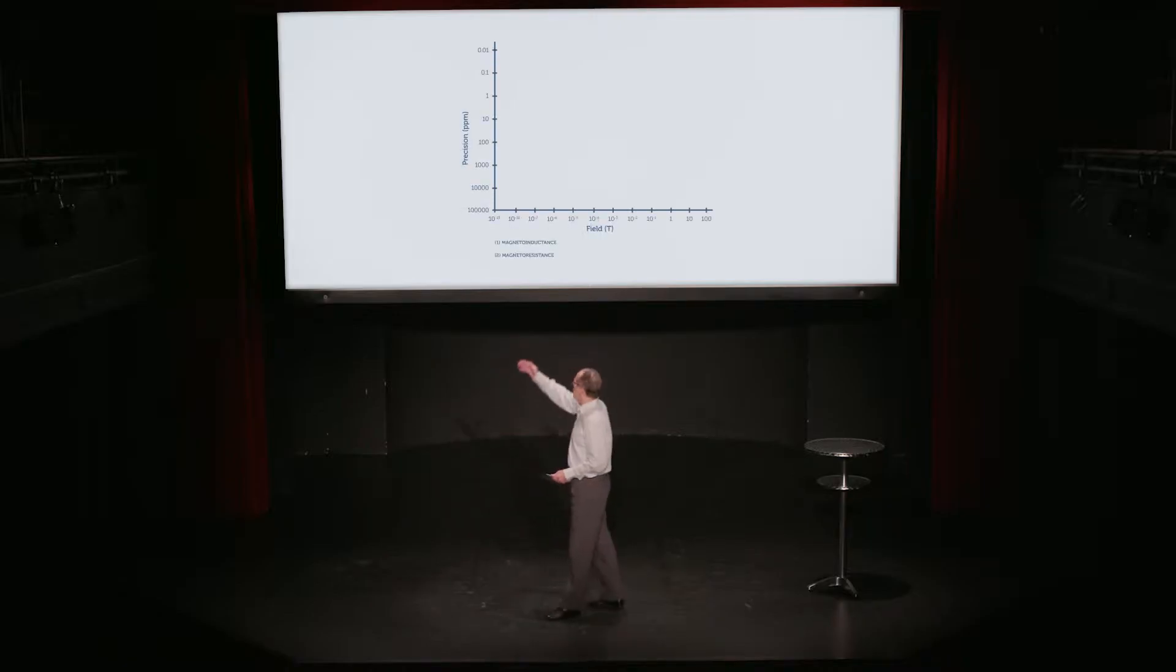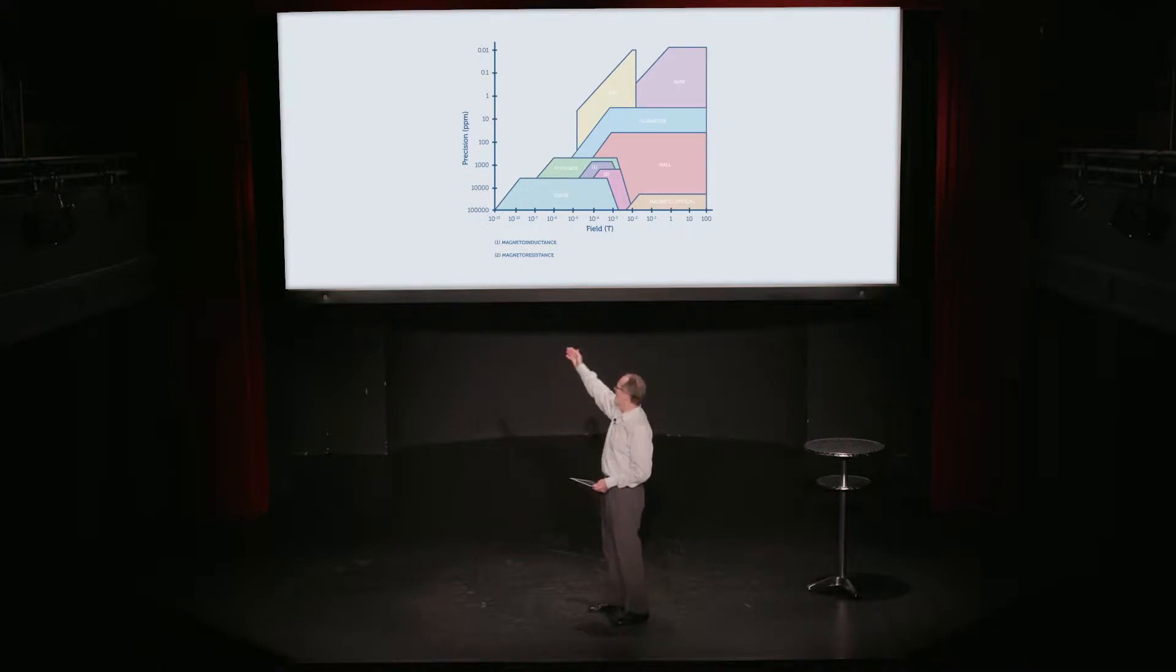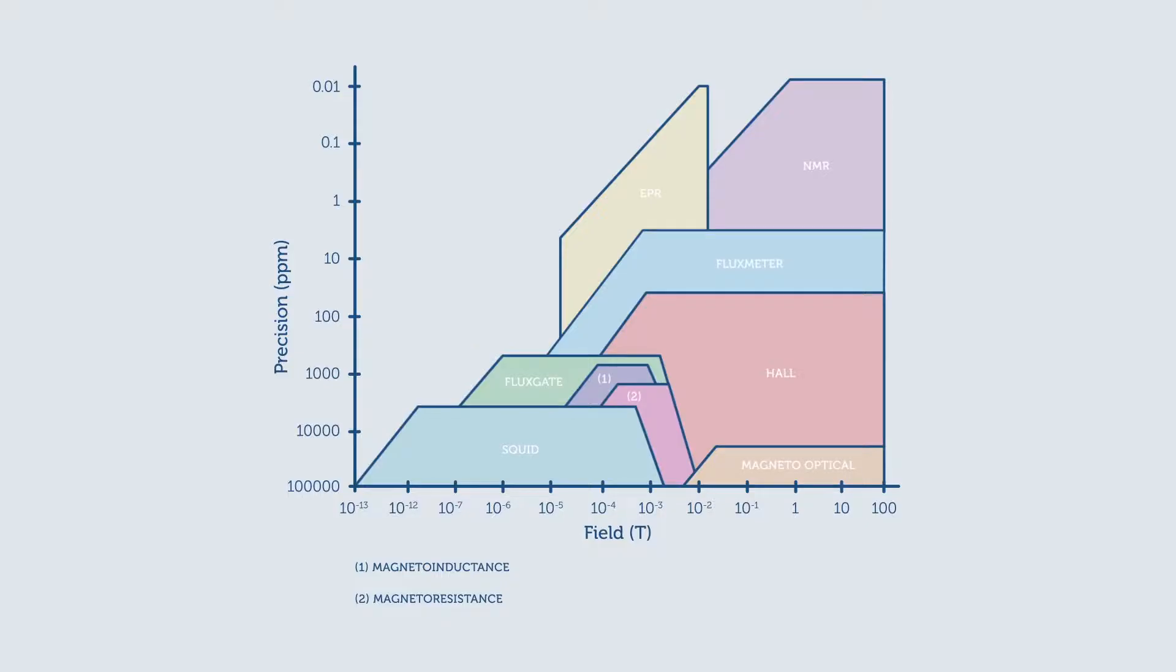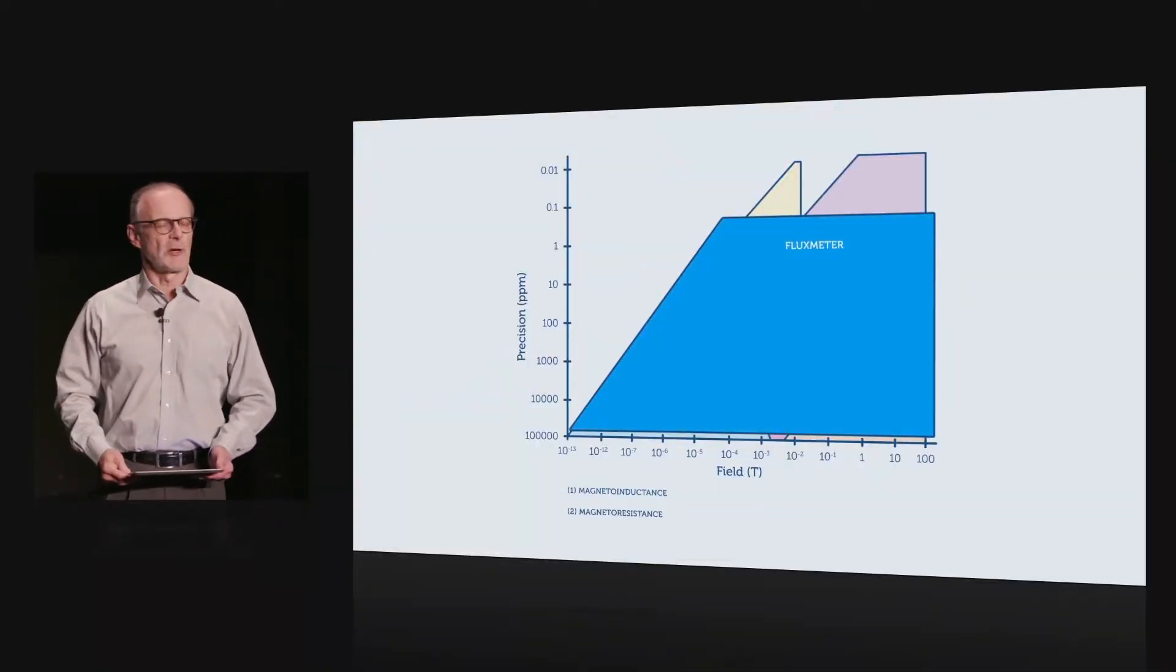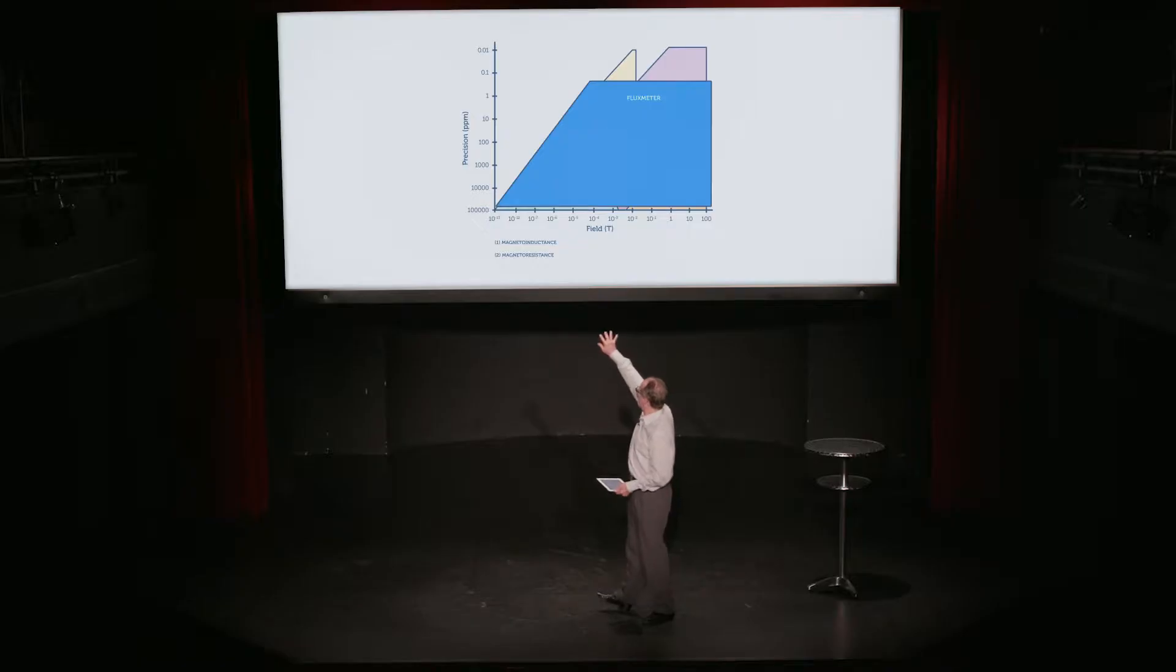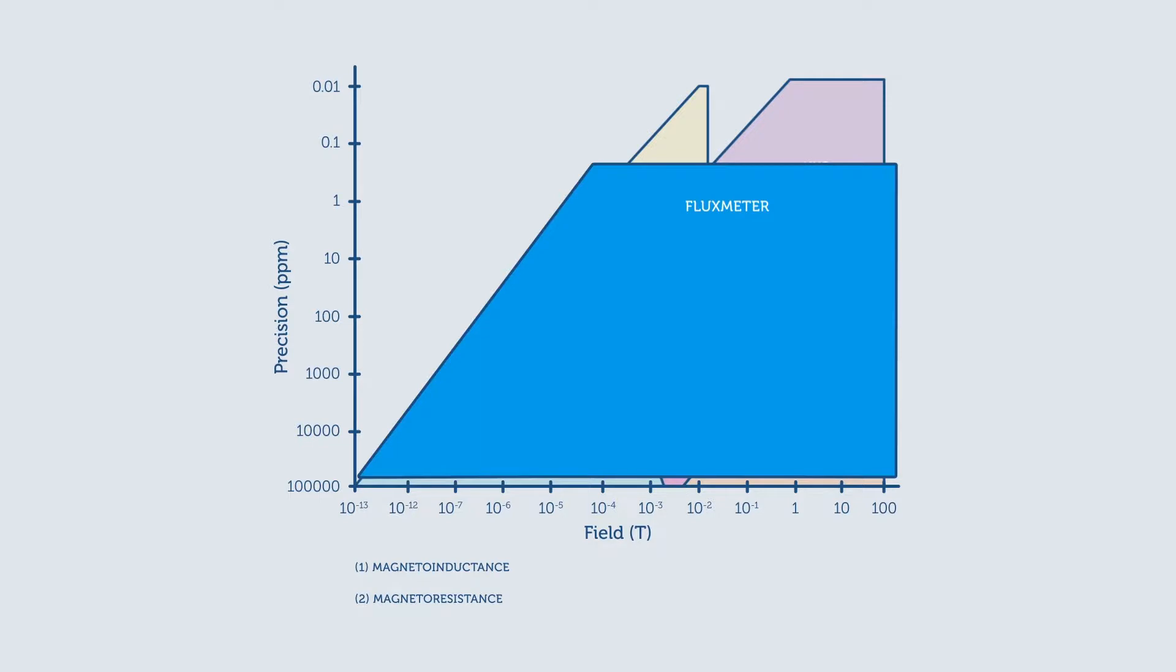If we look at where they are in this categorization of magnetic field measurement techniques, where we categorize all the techniques along the horizontal axis by the range that they cover, and on the vertical axis the precision that they can achieve, we see that flux meters have a pretty impressive place for being such a well-respected place in history. They achieve remarkable precision, second only to NMR and ESR, and cover a wide range of fields that is absolutely second to none.